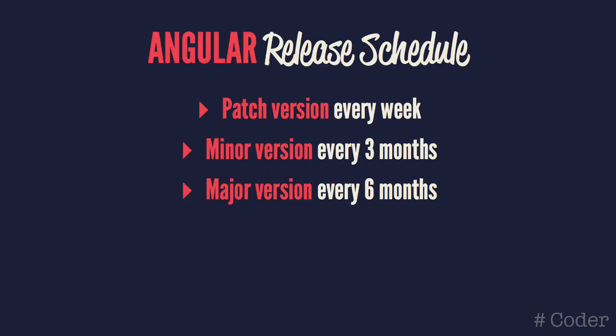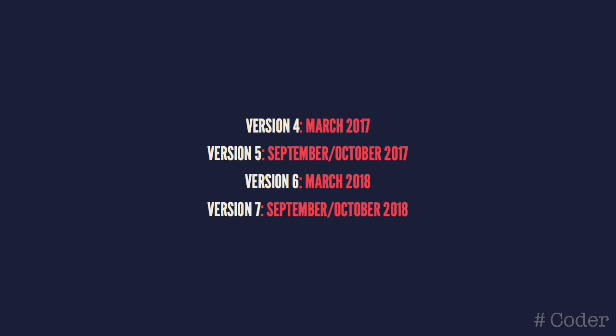The Angular team has set out a tentative roadmap for the next 6 months that outlines a release schedule split up into 3 cycles. A new patched version of the framework is scheduled to be released each week, with minor updates being released on a quarterly basis, and finally a major release with easy-to-migrate breaking changes coming every 6 months. This means that with the release of version 4 in March of 2017, we can expect version 5 around September and so forth.